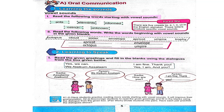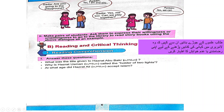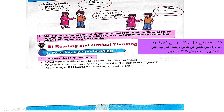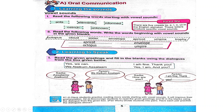Sadia says: As-salamu alaikum. Ayaan replies: Wa alaikum as-salam. Sadia: How are you? Ayaan: I am fine, thank you. Sadia: Are you going to the playground? Ayaan: Yes, I am. And you? Sadia: Yes, me too. Can we play together? Ayaan: Yes, we can.